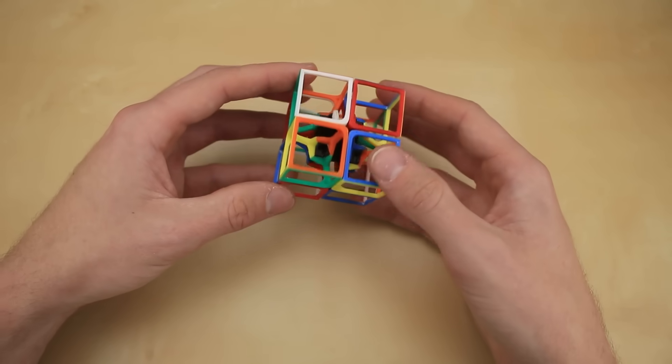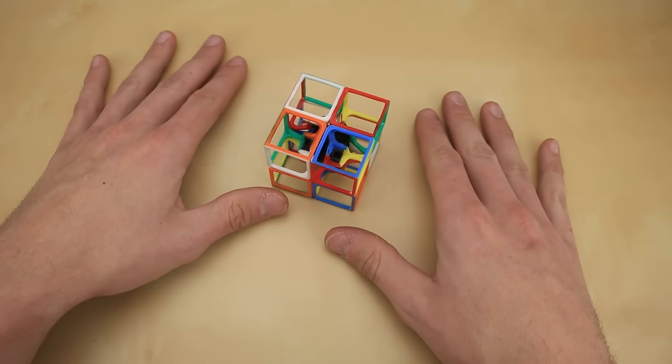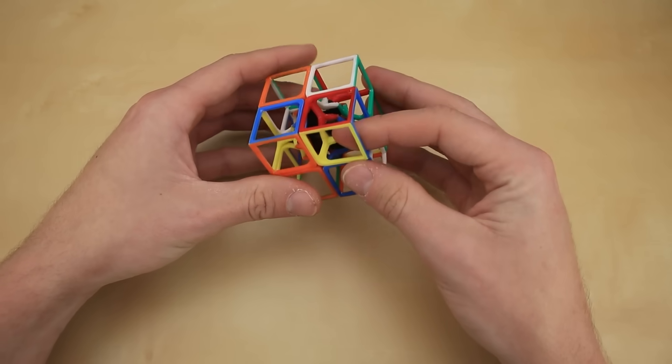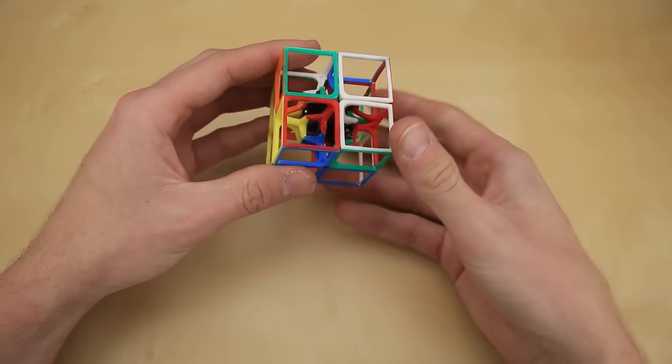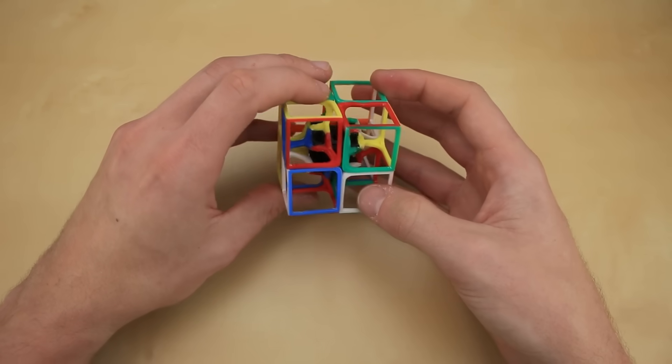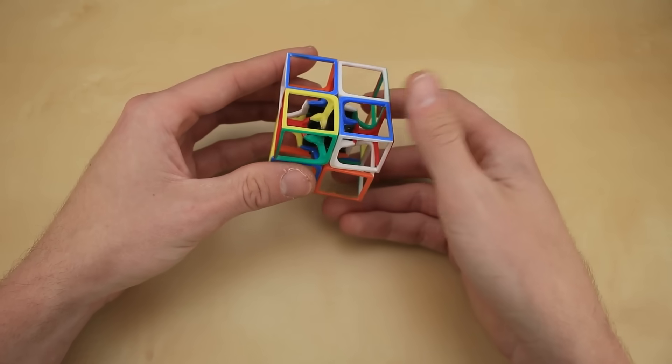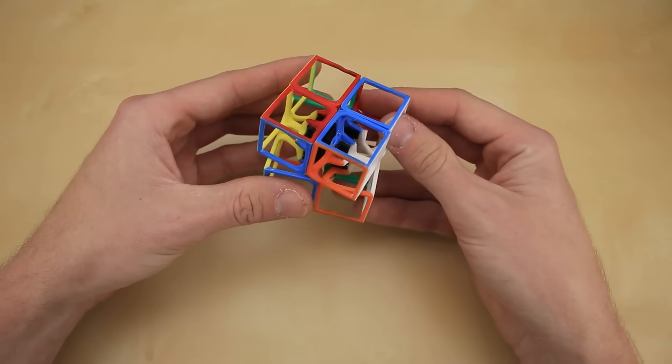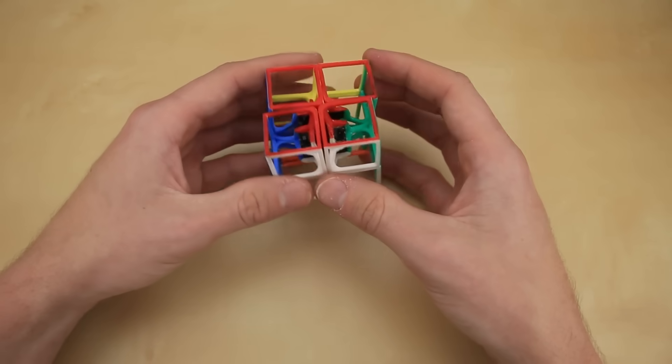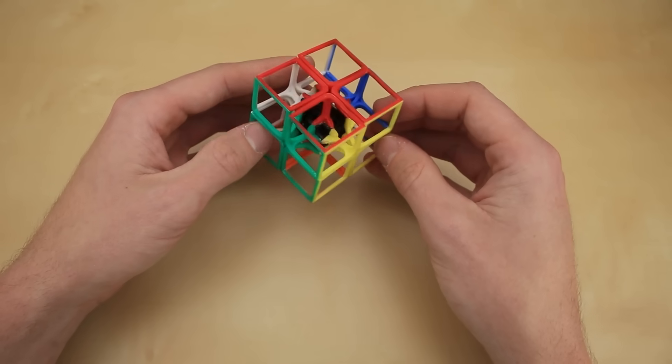So now that the cube is all scrambled up, let's go ahead and try a quick solve. So 3, 2, 1, and go. I will say that the skeletal nature of the pieces means that it can be a little bit tricky to turn, and that, combined with the poor turning of the original cube, means that this thing isn't exactly a speed cube, but at the same time, it works perfectly fine for a casual solve. Also, I just accidentally did CLL. Oops.